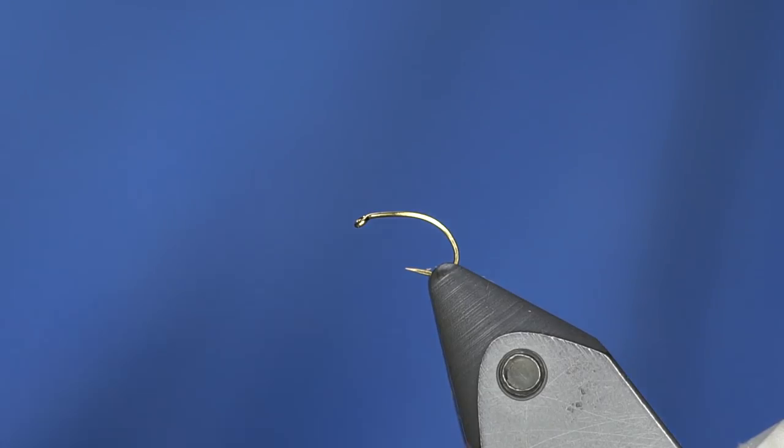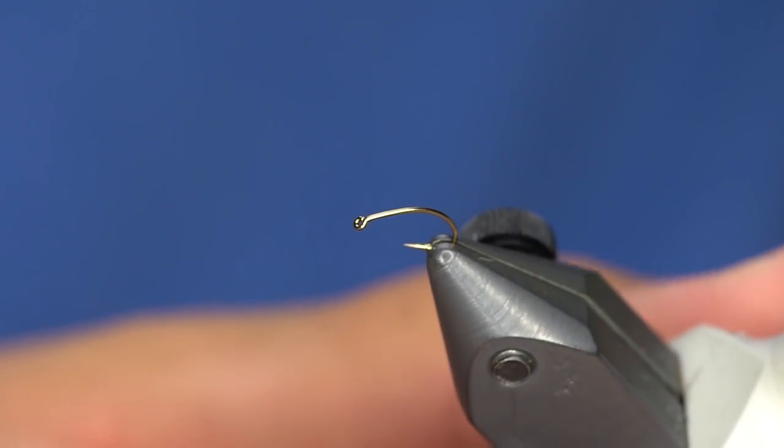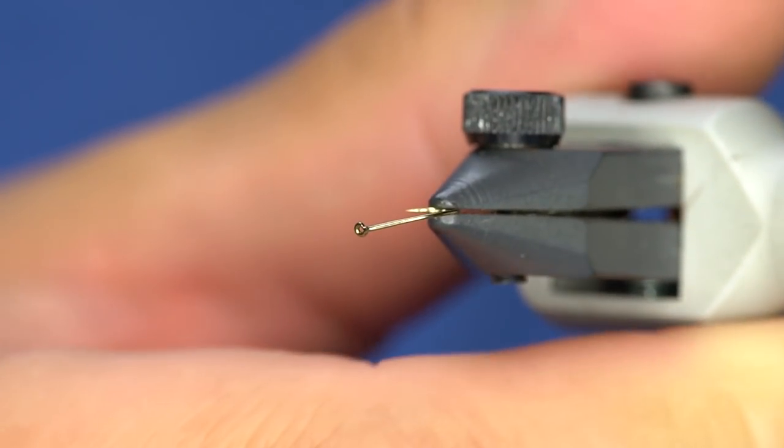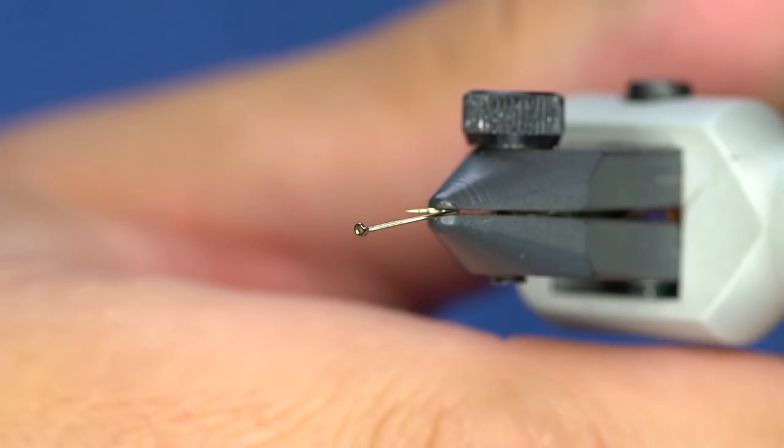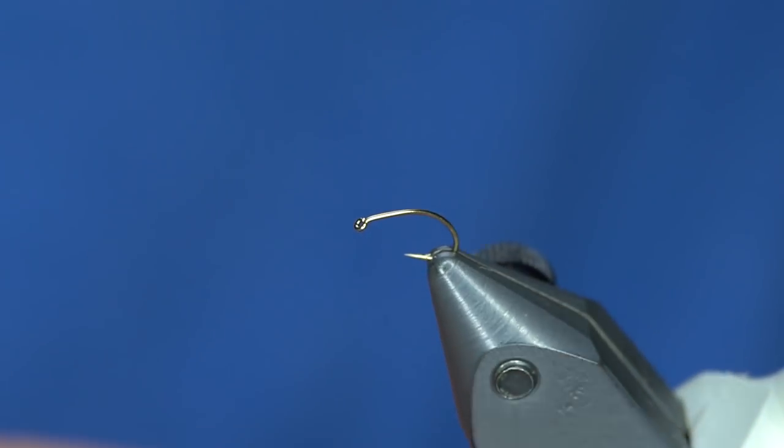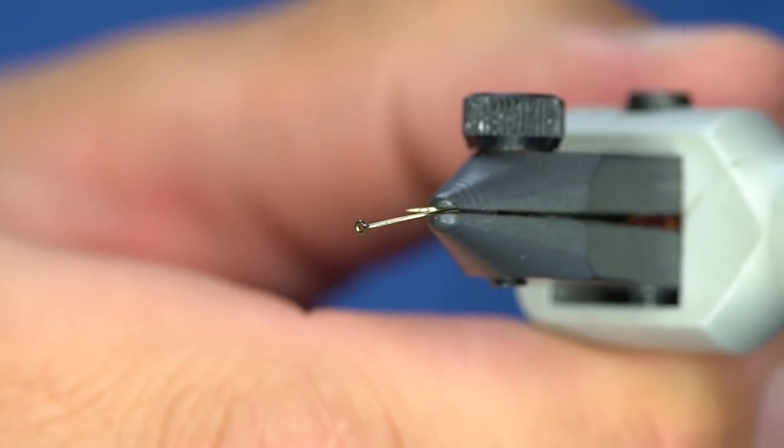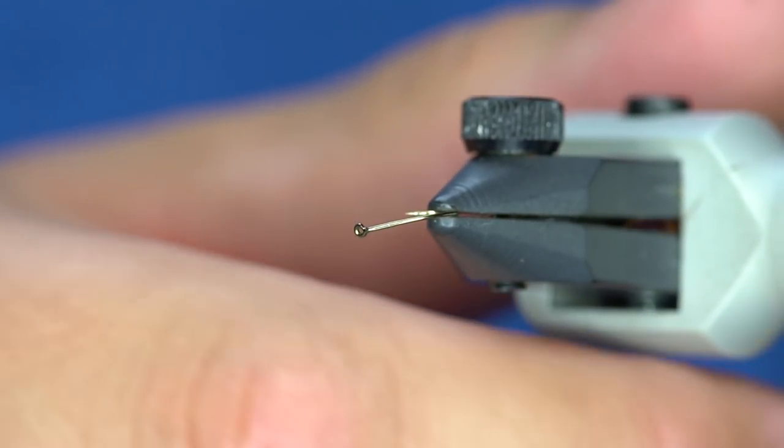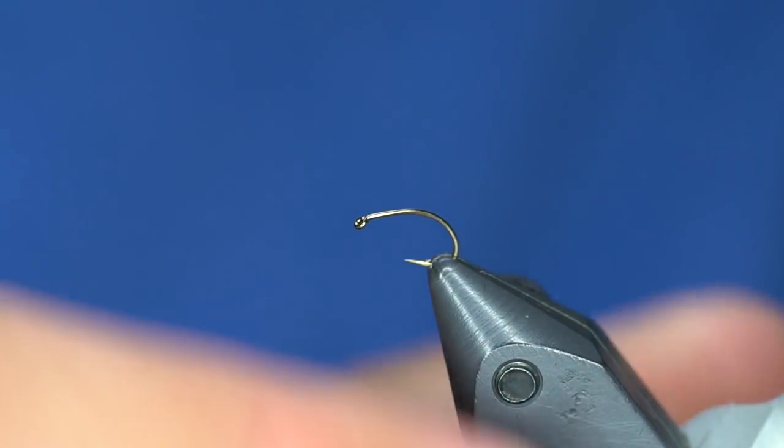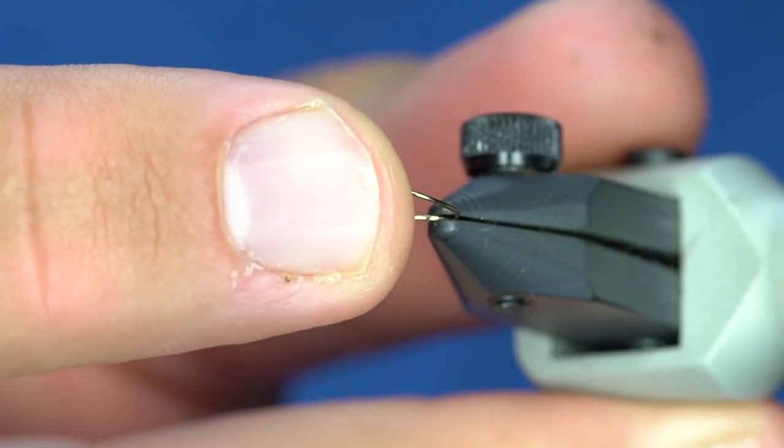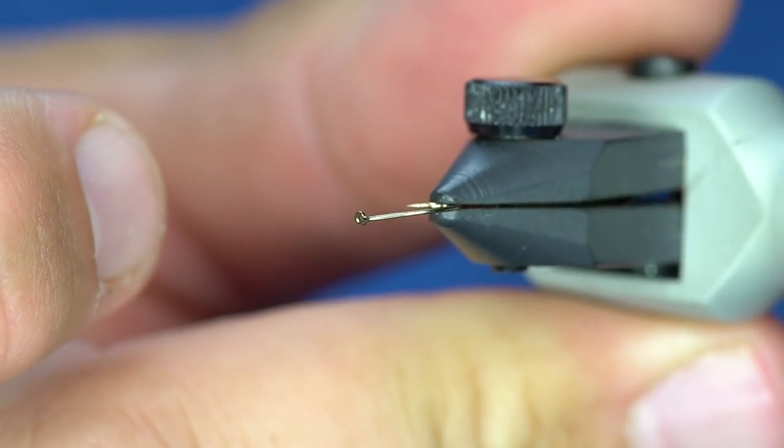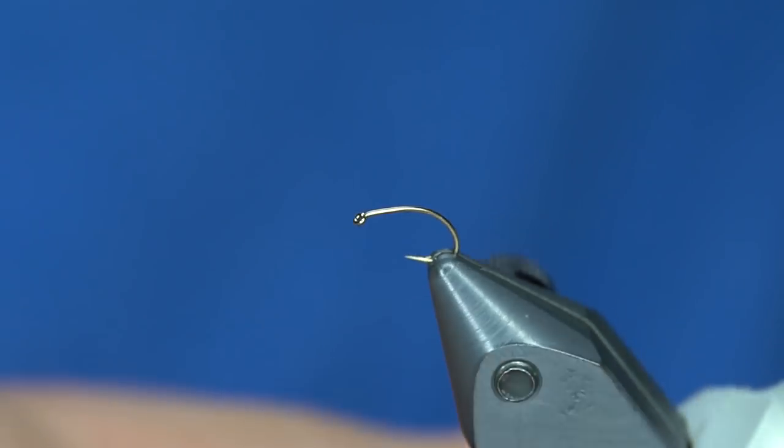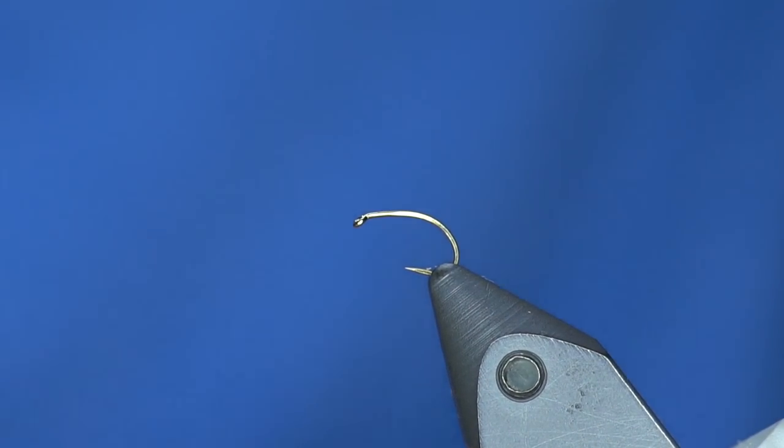This is a Daiichi 1130, one of the best caddis fly hooks around. If you can see, that's offset. A lot of times with caddis, they're really aggressive takes and the offset hook point helps you hook more of those fish. If you tie this fly, don't straighten the hook out, just leave it crooked. One time I had a customer try to return some of these because they thought they were all bent. Jokes on you, buddy.